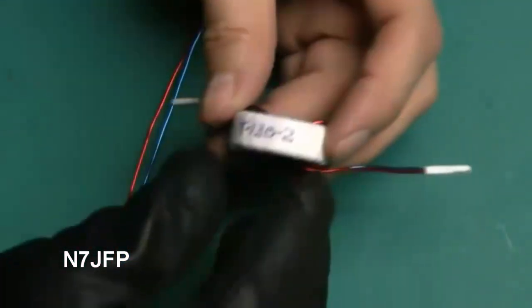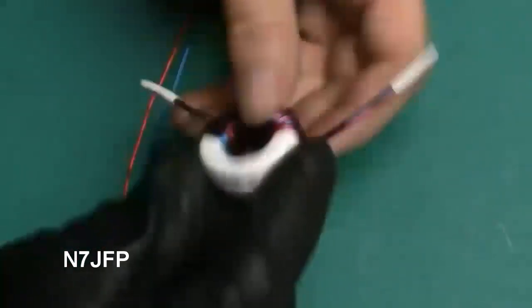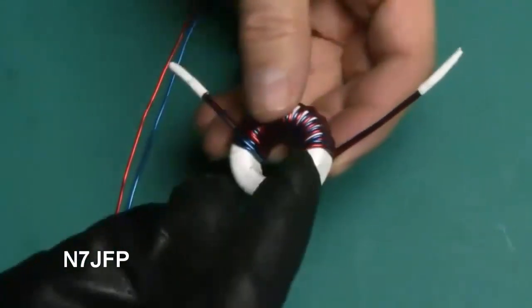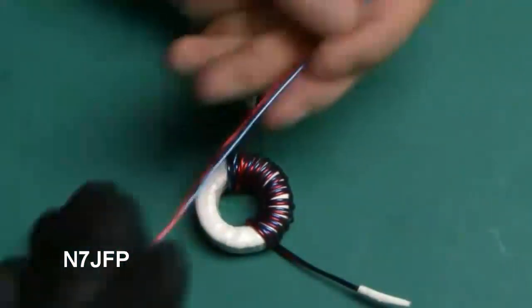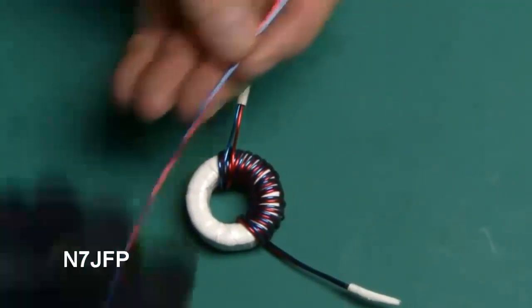Okay, we still got the T132. We've got sixteen turns on one side. We're going to put another sixteen turns on this side. Got the wire cut, 30 inches, blue and red. Start in the middle.